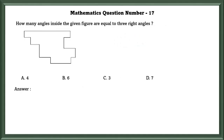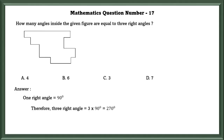Mathematics question number 17. How many angles inside the given figure are equal to 3 right angles? One right angle is equal to 90 degrees. So, 90 plus 90 plus 90 is equal to 270 degrees.